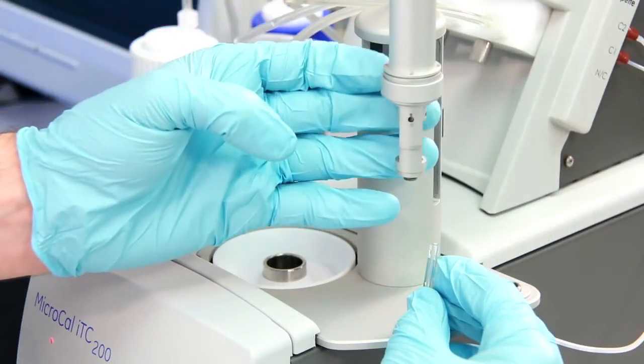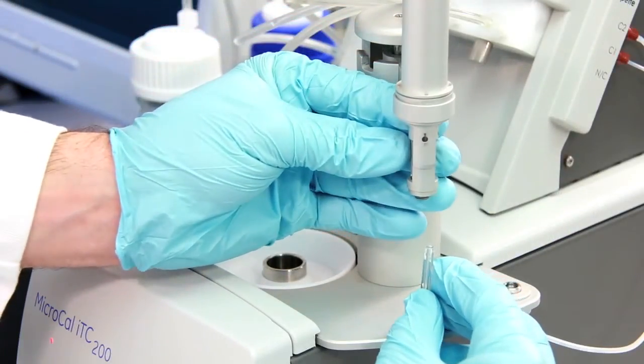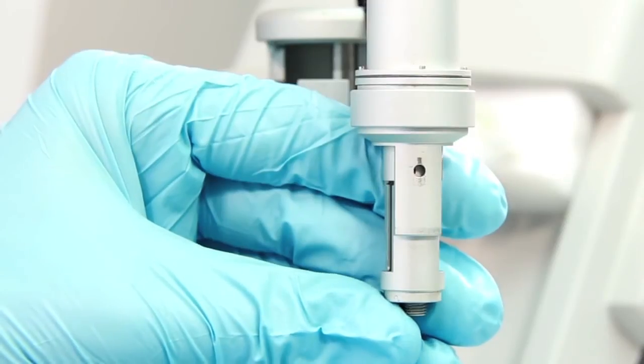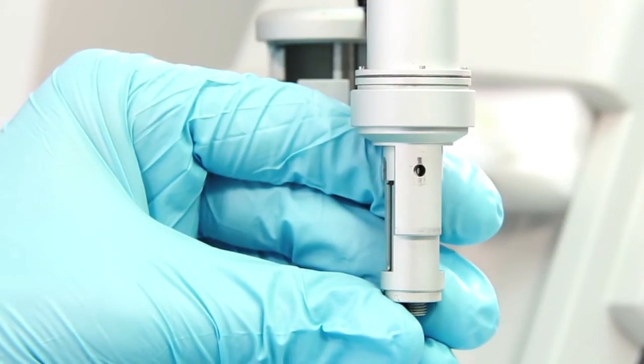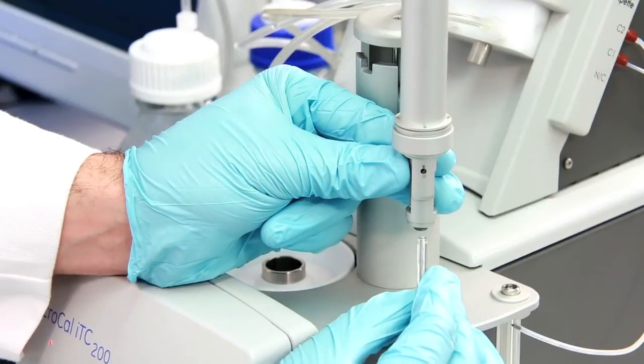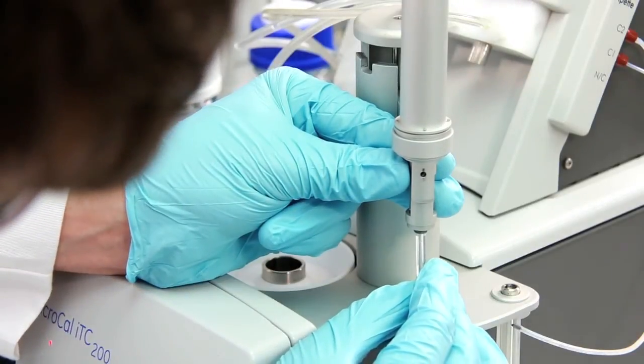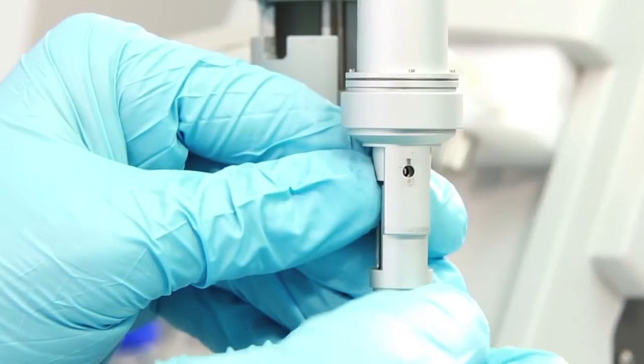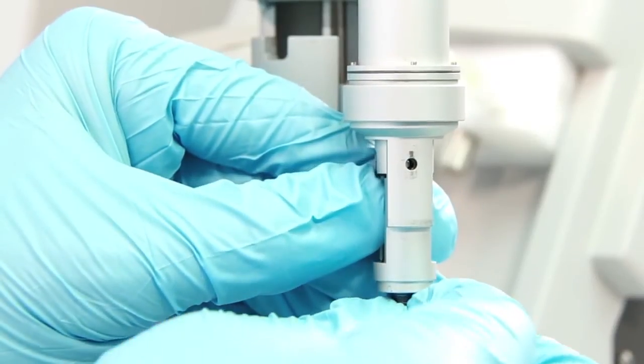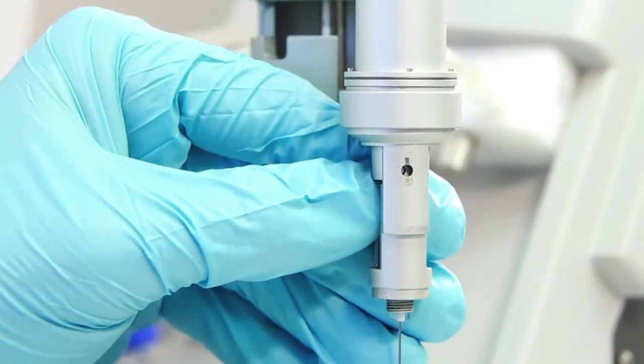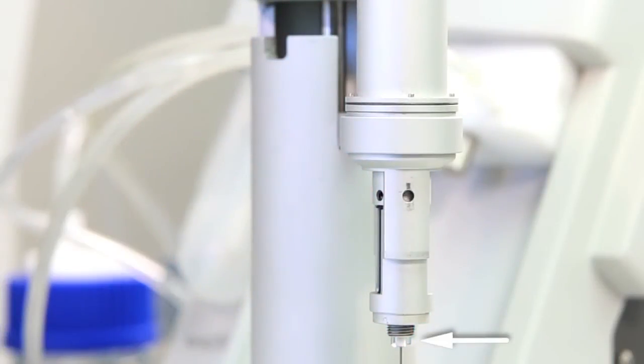Now bring the pipette over and align the two holes in the pipette, one in the rotating piece and one in the fixed frame piece, to each other. Carefully push the syringe up into the pipette body so that a couple millimeters are exposed.